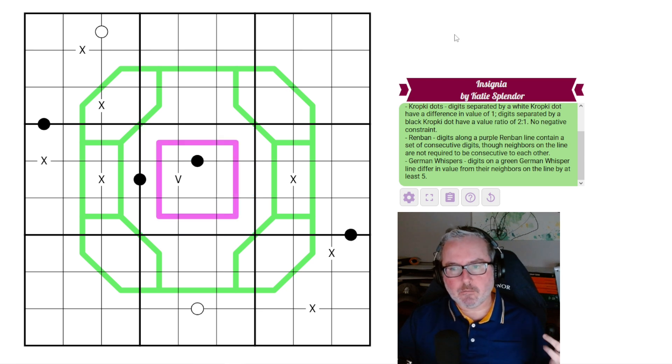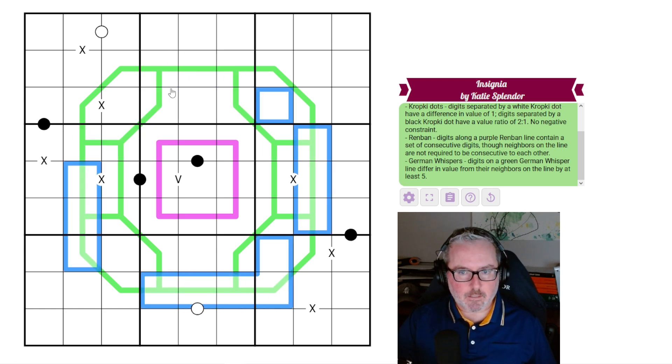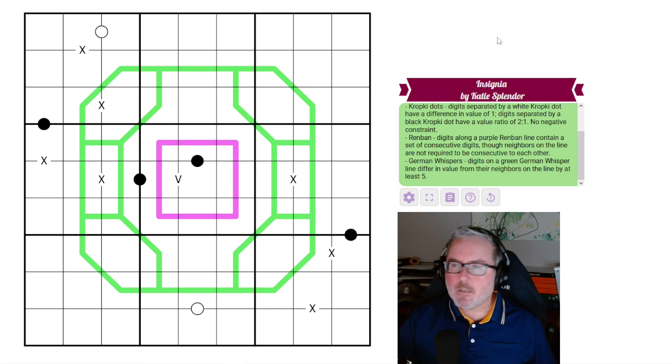And then of course, the last one here is German whispers. So digits on a green German whisper line differ in value from the neighbor on the line by at least 5. So take your pick, this guy here, whatever it is, this has to be 5 away from it, this has to be 5 away from that one, and so on and so forth, all across these lines. And that's it. So that said, let's just jump into this one. Don't need to take too much time going over this stuff. This is all fairly normal Sudoku variants. So links in the description below. Let's get started on this one and just enjoy ourselves.